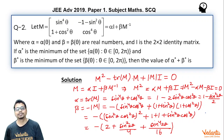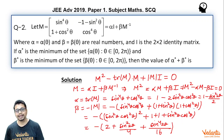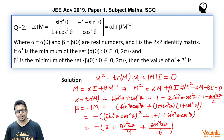We want alpha* plus beta*: alpha* is the minimum value of alpha as theta varies from 0 to 2π, and beta* is the minimum value of beta over the same range. Carefully, both alpha and beta depend on sin²(2θ). Both are minimized when sin²(2θ) is maximized — because those terms appear with a minus sign — and the maximum value of sin²(2θ) is 1, which it definitely attains as theta varies from 0 to 2π.